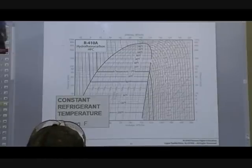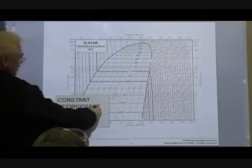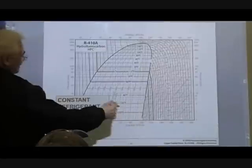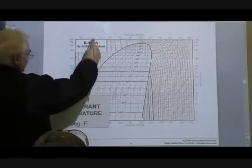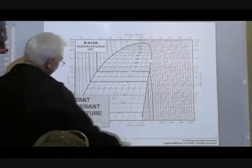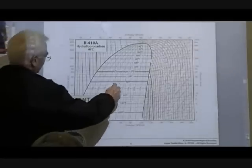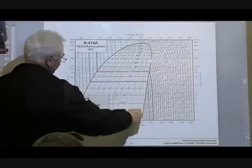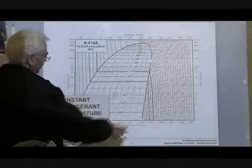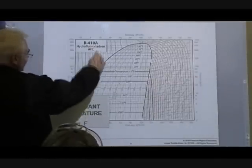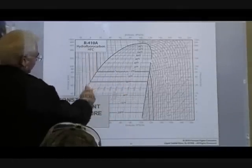Outside of the saturation curve, your pressures are going up and down and your refrigerant is going through the various phases of change. When you get outside of the bell curve, the temperature lines change direction — the temperature goes up instead of vertical. The most important part is what's happening inside the curve, from saturated liquid to saturated vapor. That's where the work is being done — in your condenser and in your evaporator. Outside the saturation curve, the temperature lines change.